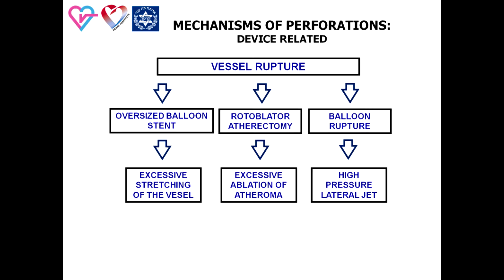The second scenario is perforation which appears after use of an intraluminal balloon or coronary device, where the important feature is proper intraluminal positioning of the guide wire at the moment of complication. In the majority of cases, this type of perforation is the result of use of an oversized balloon or stent. Excessive stretching of the vessel is the mechanism of vessel rupture.